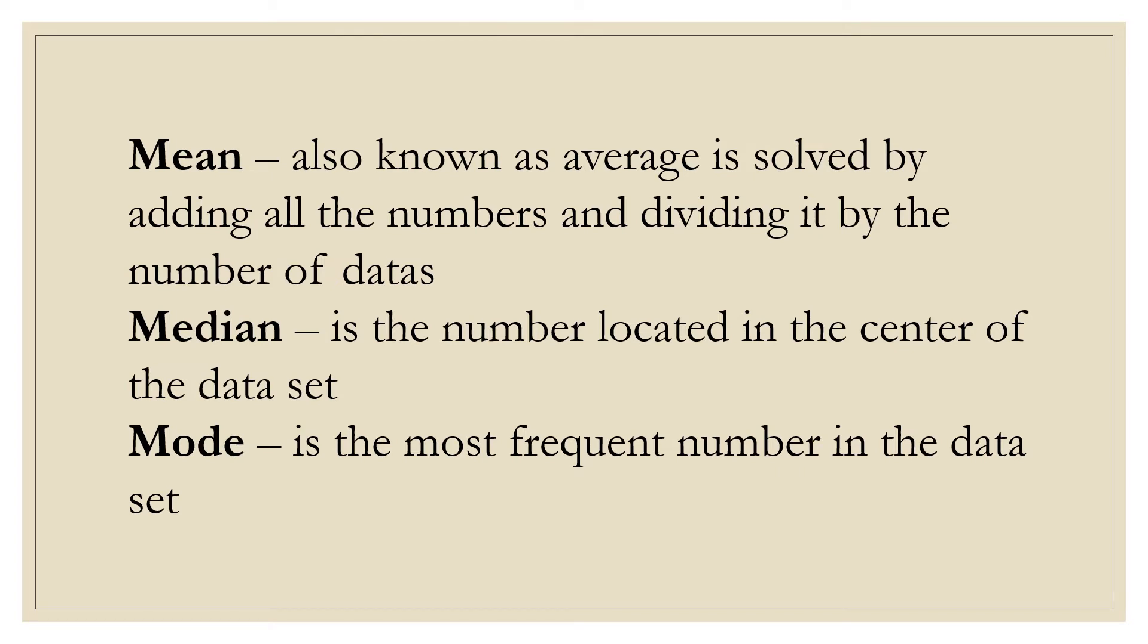Mean refers to or is also known as average and it is solved by adding all the numbers and dividing it by the number of data that you have. Median is the number located in the center of the data set. And mode, this refers to the most frequent number in the data set.